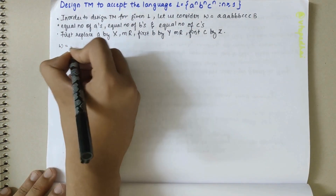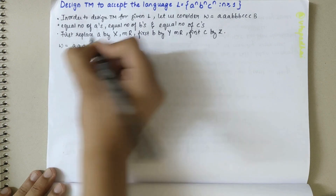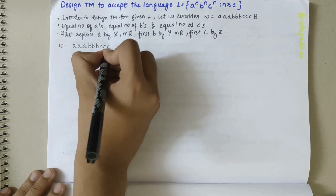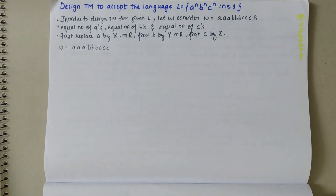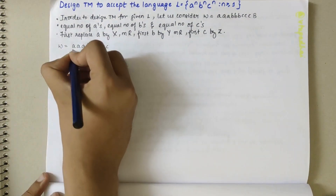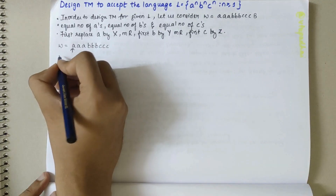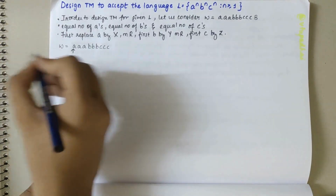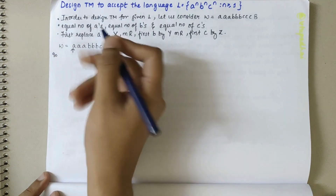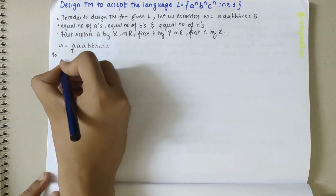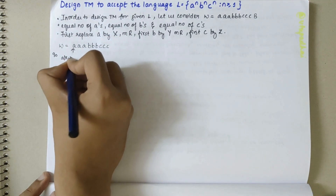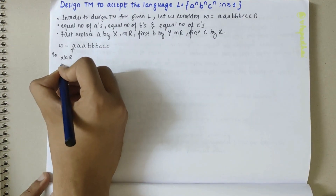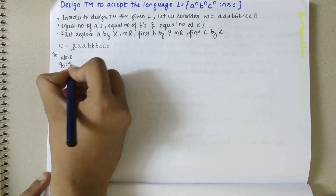So w is equal to three A's followed by three B's and three C's. We are initially in the Q0 state. When we read the first A, we replace this A by X and shift right. So there is a transition from Q0 to Q1.